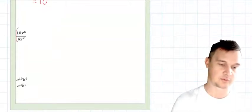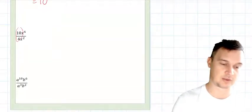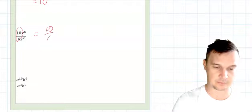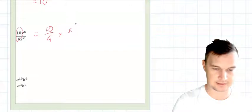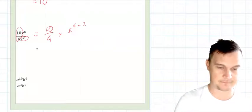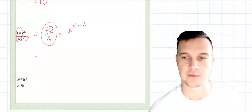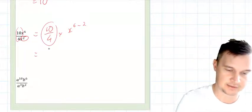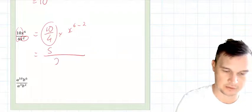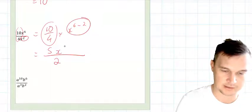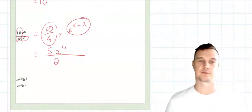Now if we go to another example where we've got numbers involved, we want to do just like index law one. We want to do this one first, and then we can move from there. So if we expand this, we basically have 10 over 4, and then multiplying that by x to the 6 minus 2. So we're going to cancel this down; we can't solve this, but we can cancel. They both have a common factor of 2, so really this is 5 over 2. And then I can combine my index law number 2 here, which is x to the power of 4, because 6 minus 2 equals 4. So 5 x^4 over 2.